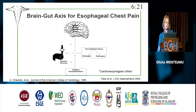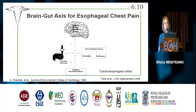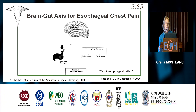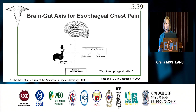There is a brain-gut axis for esophageal chest pain, as demonstrated in several studies. The first study in 1996 showed that in patients with coronary artery disease on angiogram, when there was chemical stimulation of the esophagus — as happens in gastroesophageal reflux — these patients also experienced a decrease in coronary artery flow, as demonstrated by intracoronary Doppler studies. Moreover, in another study from 2004, 60% of patients who experienced reflux symptoms also had myocardial oxygen desaturation.